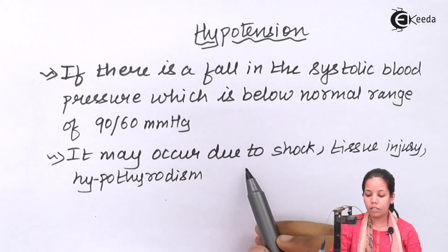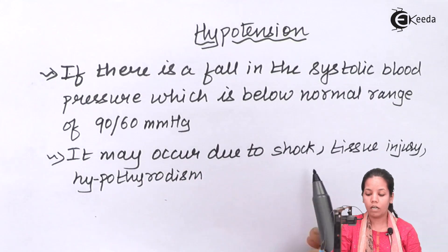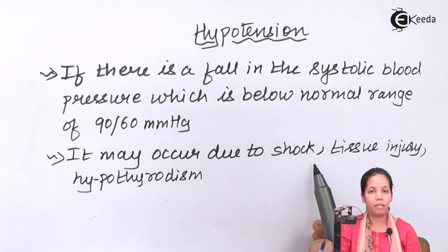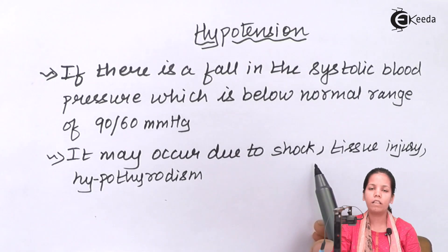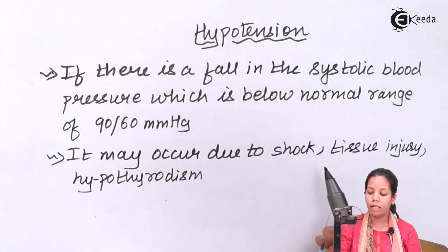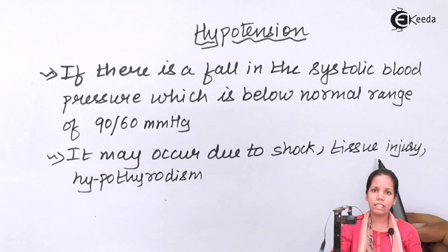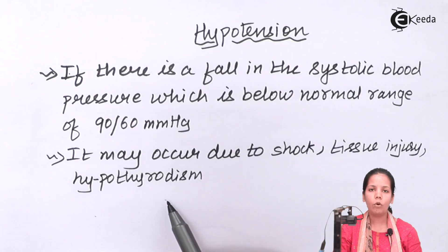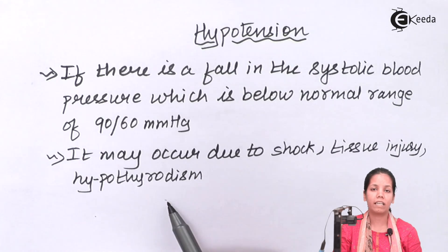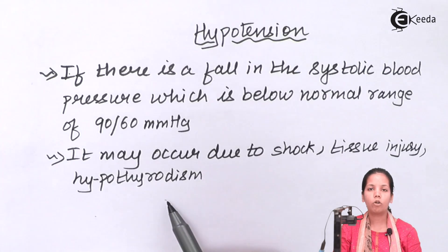It may occur due to several reasons — due to sudden shock news which is unbearable to hear, such as somebody dying or getting injured, whether in the family, friends circle, or neighborhood. If there is a sudden tissue injury, especially during organ transplant or grafting, or certain conditions like hypothyroidism. We know that the thyroid gland makes certain hormones, and less secretion of those hormones like T3, T4, or thyroxin may also initiate this condition.